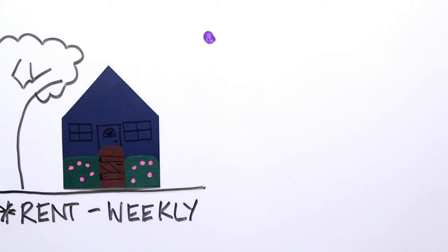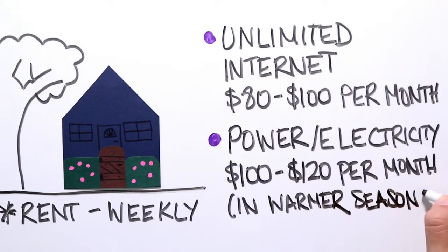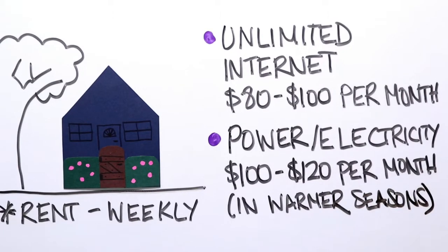Unlimited internet for one household is around $80.00 to $100.00 per month. And electricity or power varies a lot, but for three people in a small unit, for example, you're looking at around $100.00 to $120.00 a month during the warmer months.